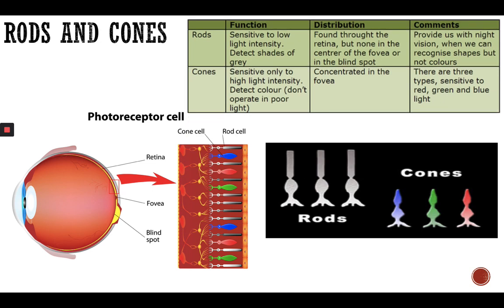Regarding their distribution: rods are found in the retina but none are in the central fovea — they provide night vision. Cones are concentrated in the fovea and there are three types, sensitive to red, green, and blue light.